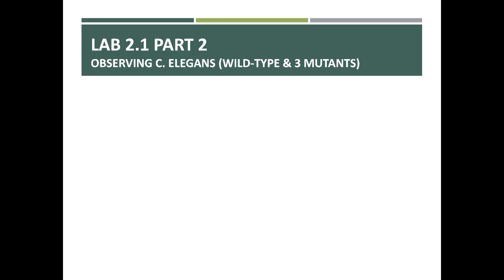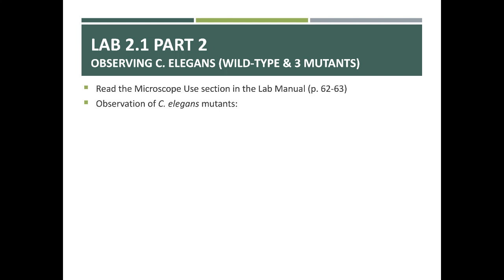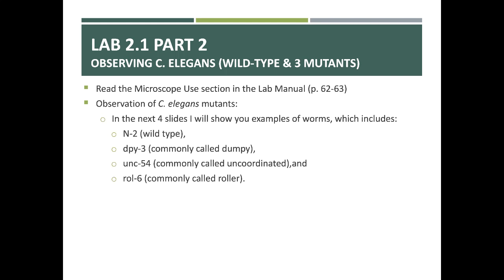Now let's move to Lab 2.1 Part 2. In this part, you're going to observe C. elegans — wild type and three mutants. Read the microscope use section in the lab manual and then observe the mutants. In the next slides, I'm going to show you videos of what we call N2 — the wild type — and then three mutants: DPY3, commonly referred to as a dumpy phenotype; UNC54, commonly referred to as an uncoordinated mutant; and Roll6, commonly referred to as a roller. As I show these videos, take notes on their appearances and movements, as you'll need those to complete the rest of this activity.